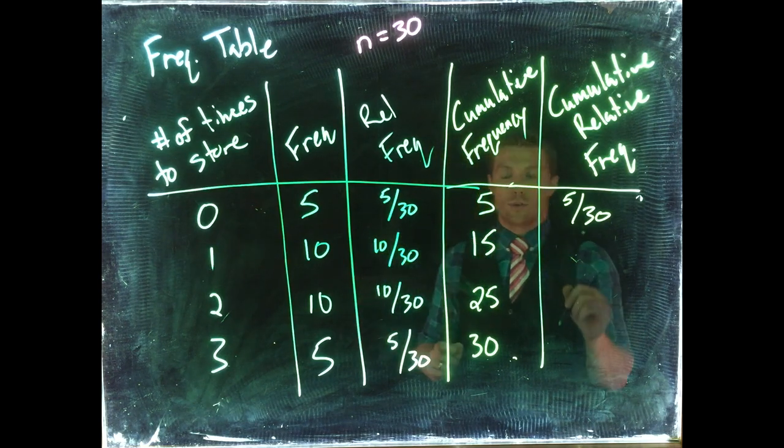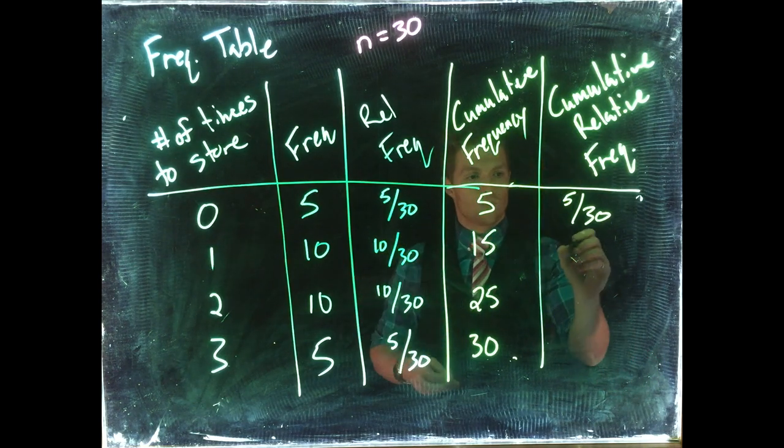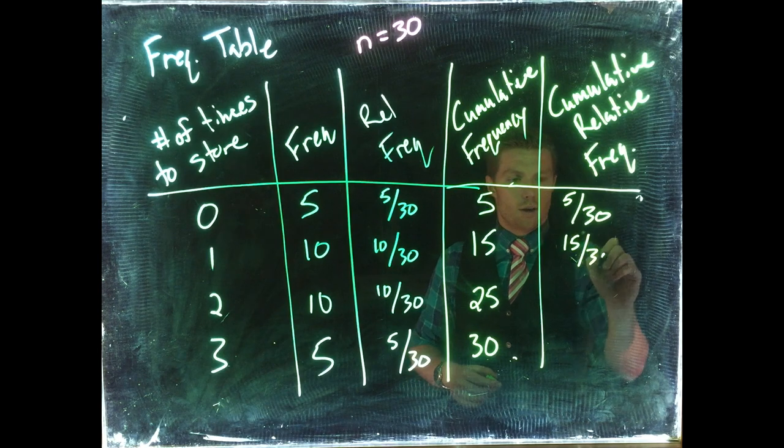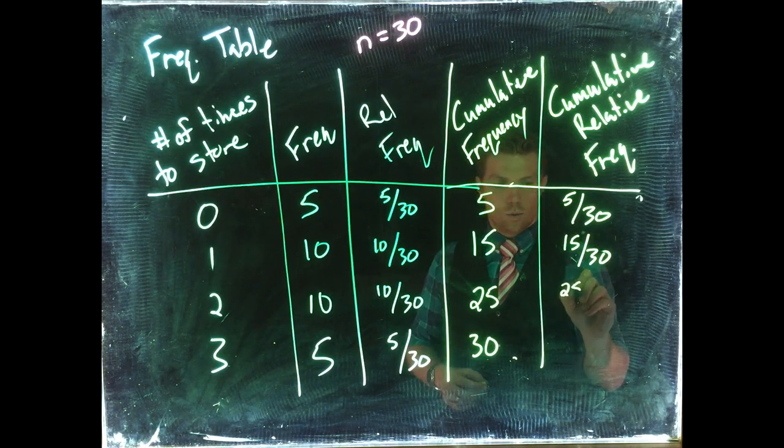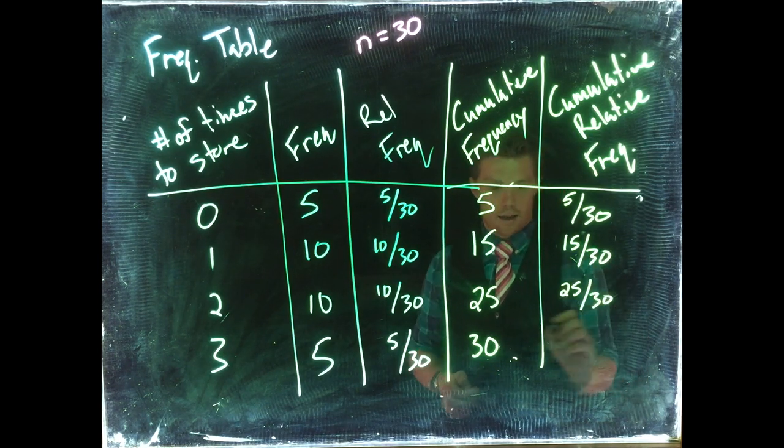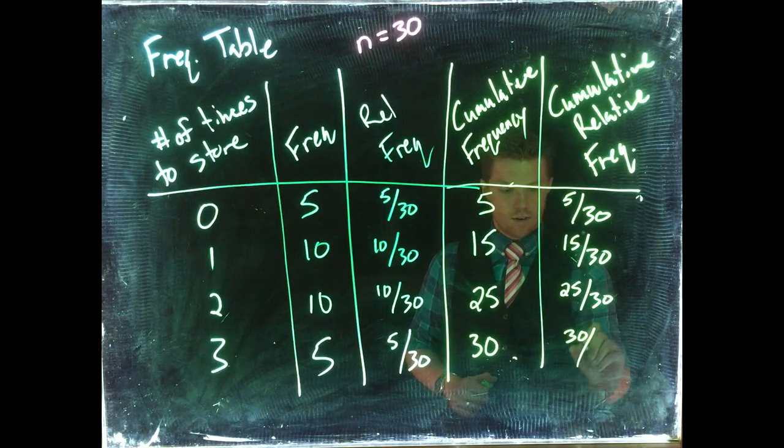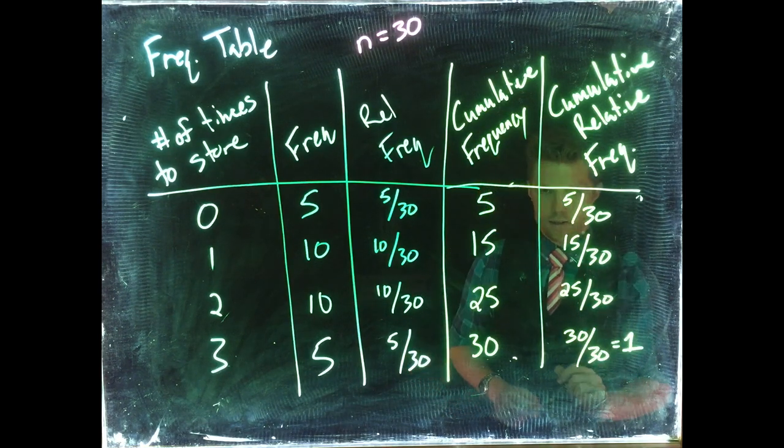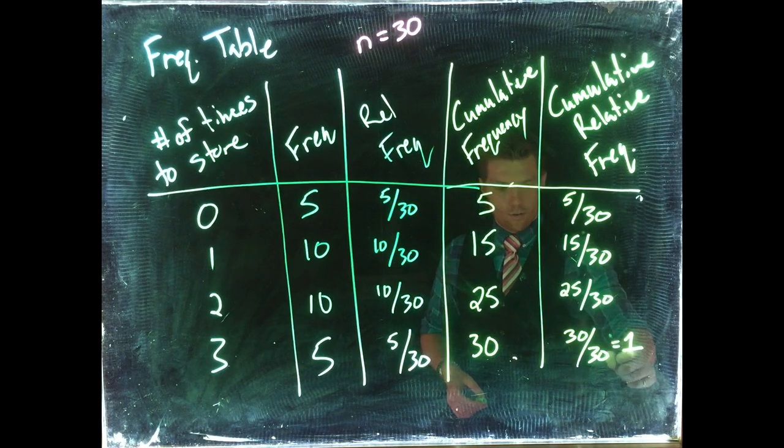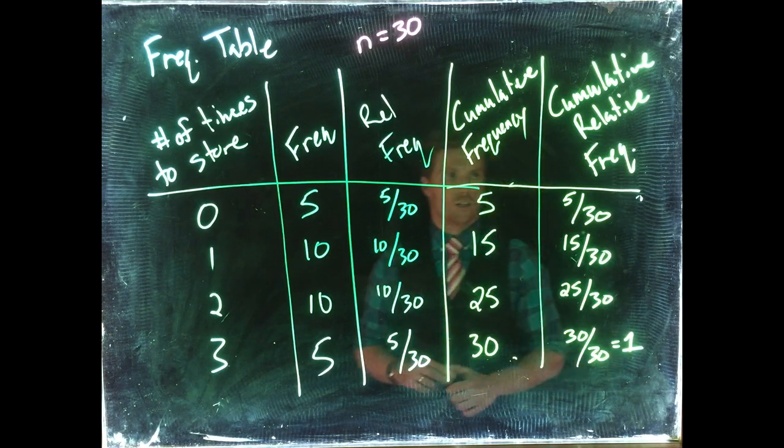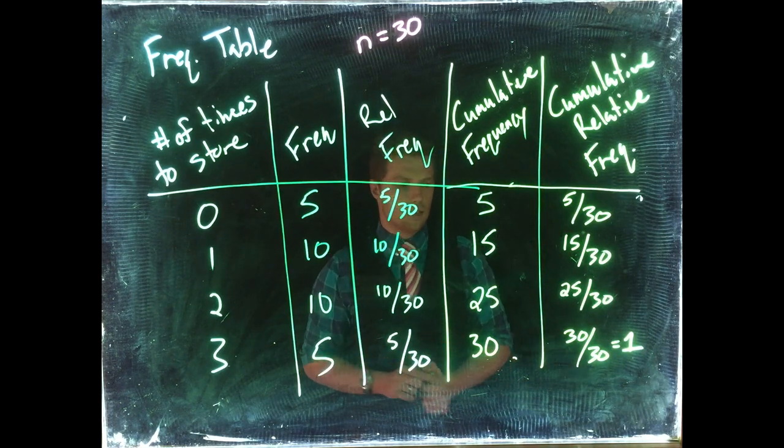Here we're going to do 5 divided by our sample size. The first one in the relative frequency and the cumulative frequency are the same. Then the next one is going to be 15 divided by 30, next one 25 divided by 30, and the last one is 30 divided by 30, which is equal to 1.